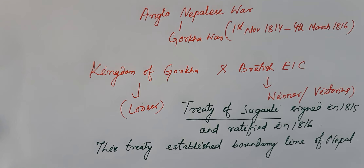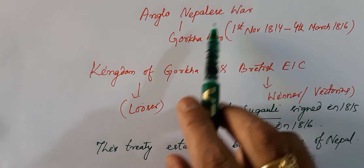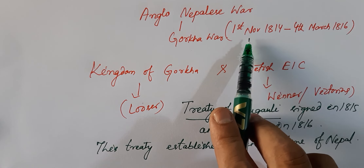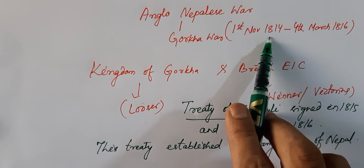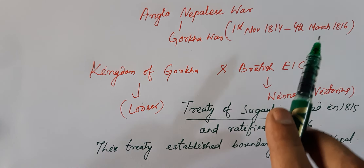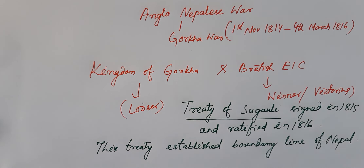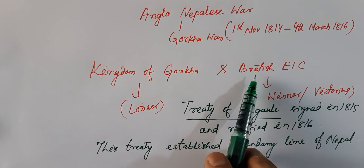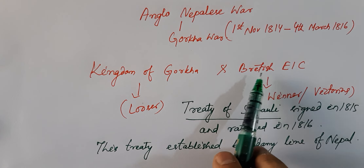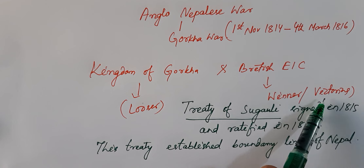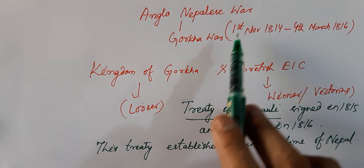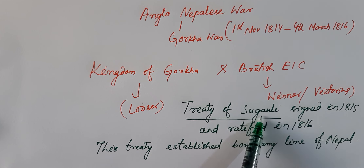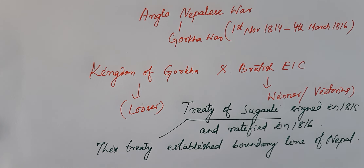Let me explain again. The Anglo-Nepalese War is called the Gorkha War. It was fought from 1st November 1814 and continued till 4th March 1816. In this war, the Kingdom of Gorkha fought against the British East India Company, and the British East India Company was victorious. After this war, the Treaty of Sugauli was signed, which established the boundary line of Nepal. Thank you for watching Vikas Academy.